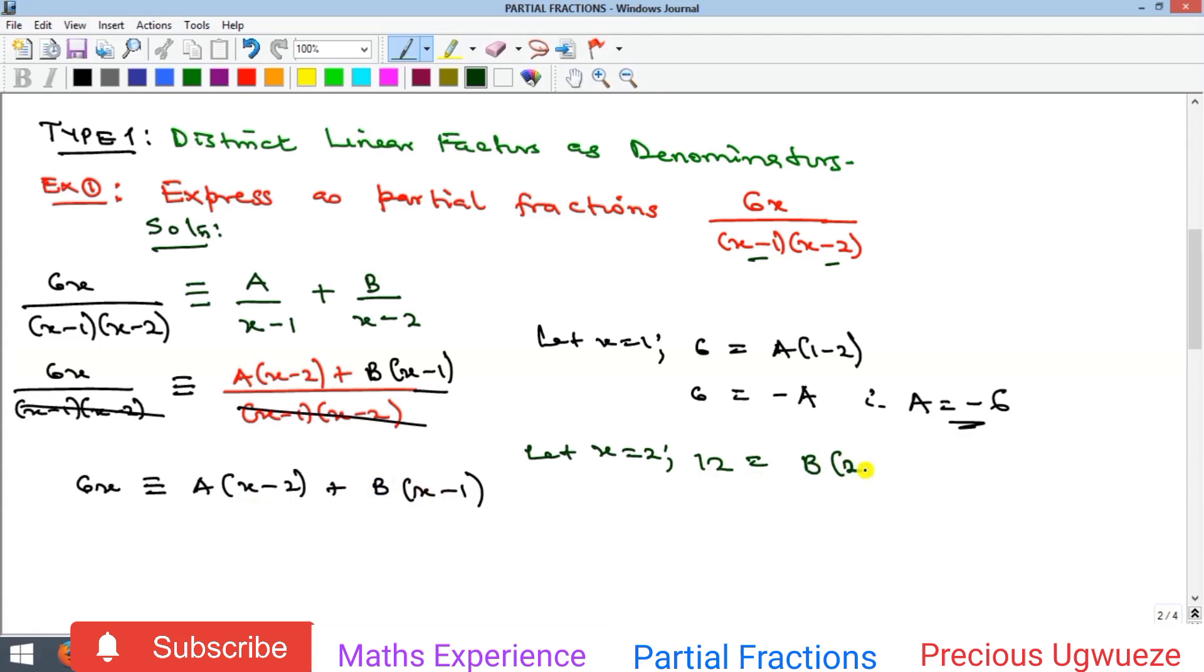12 equals (2 minus 1) times B, which is B. Therefore, B is 12. If you bring all of that into these partial fractions, it means that 6x over (x minus 1)(x minus 2) is actually equal to...